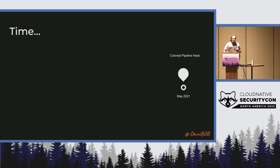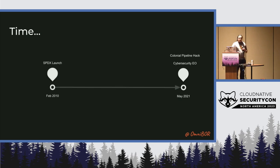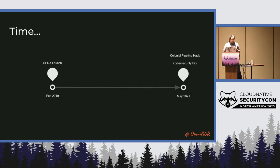Let's talk about timeline. We had the Colonial Pipeline hack, which occurred in May 2021 — I'm pretty sure everyone here is familiar with it. That ended up causing the cybersecurity executive order to be put out by the Biden administration. But if we go back in time, much of the work that led up to Omnibore was the creation of SPDX, which was launched in February 2010.